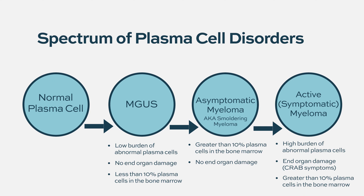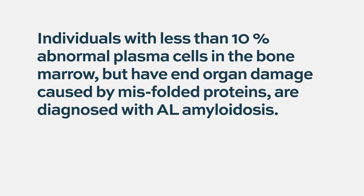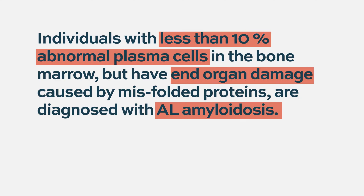So where does amyloid fall on this spectrum? In 60% of patients with amyloidosis, there are less than 10% plasma cells in the bone marrow, so they fall in the MGUS category. However, if they have end organ damage attributable to the misfolded protein — such as heart failure or kidney problems related to the amyloidogenic protein in that tissue — this patient doesn't have MGUS plus amyloid. This patient has primary systemic amyloidosis.